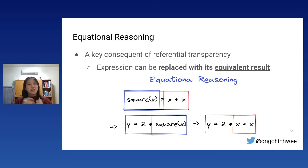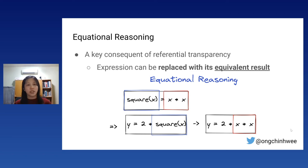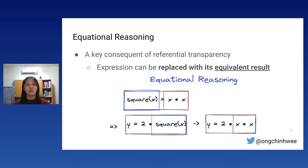The key consequence of referential transparency is equational reasoning, meaning the expression or function can be replaced with its equivalent result.